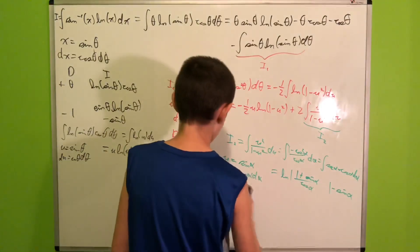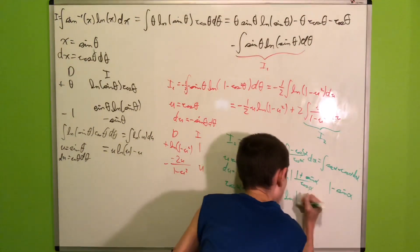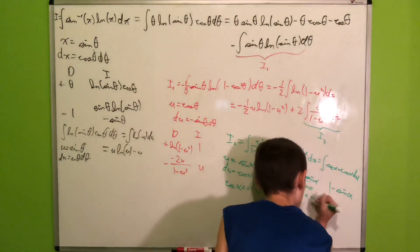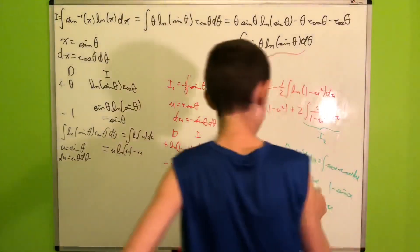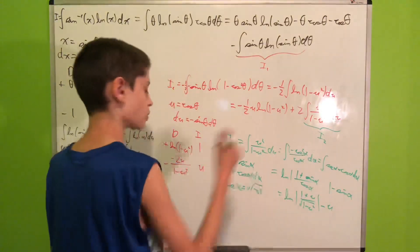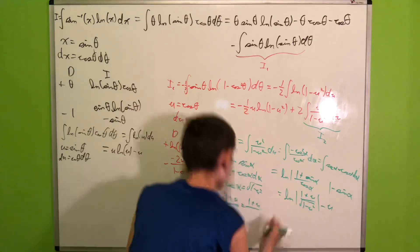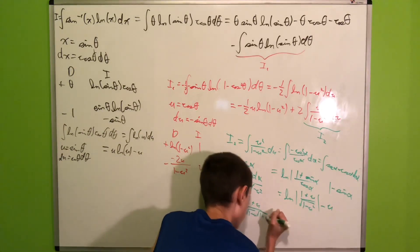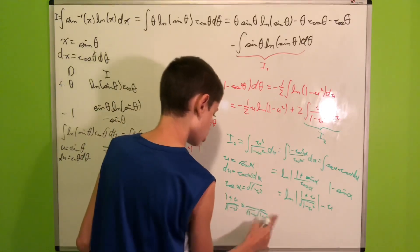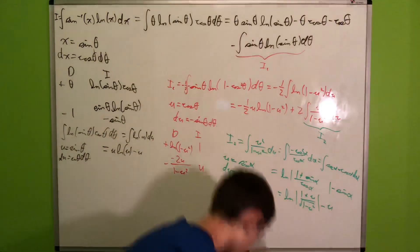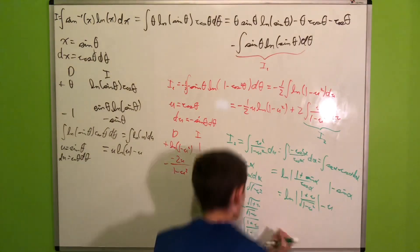Integrating, ∫sec α dα = ln|sec α + tan α|, and ∫cos α dα = sin α. So I2 = ln|sec α + tan α| − sin α. We can rewrite sec α + tan α as (1 + sin α)/cos α. Since u = sin α, cos α = √(1 − u²), so we get ln|(1 + u)/√(1 − u²)| − u.